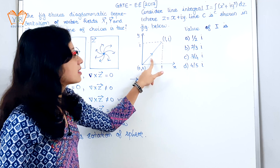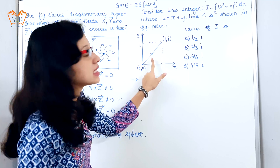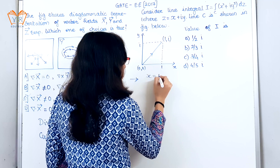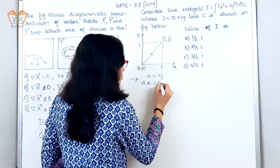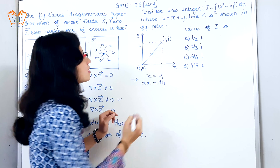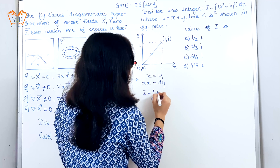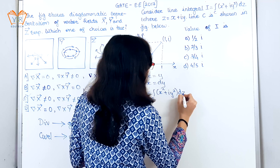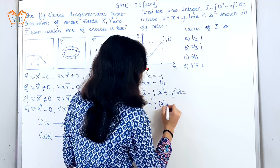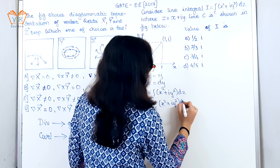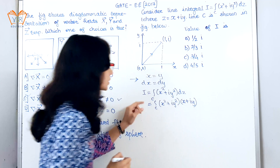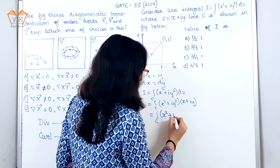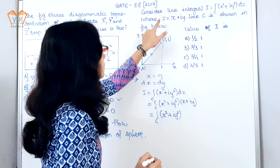If you see this line C, we can say that x and y are linearly proportional. So we can write x = y, which means dx = dy. It is given in the question: integration of x² + iy² dz. The value of z is x + iy.